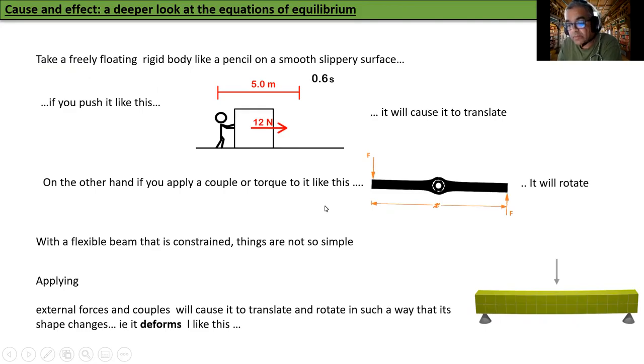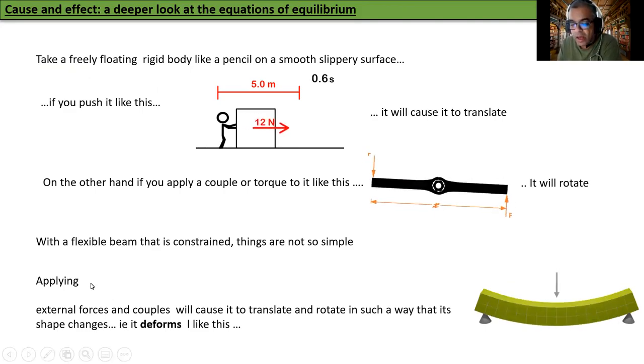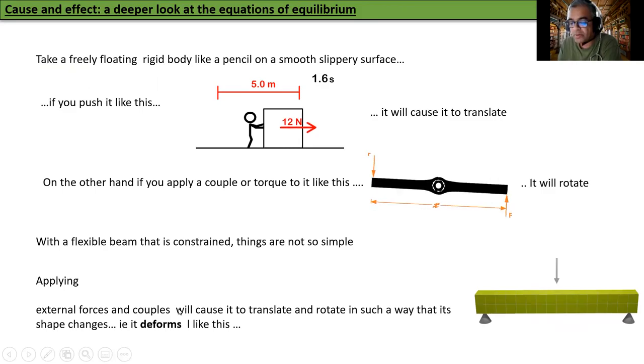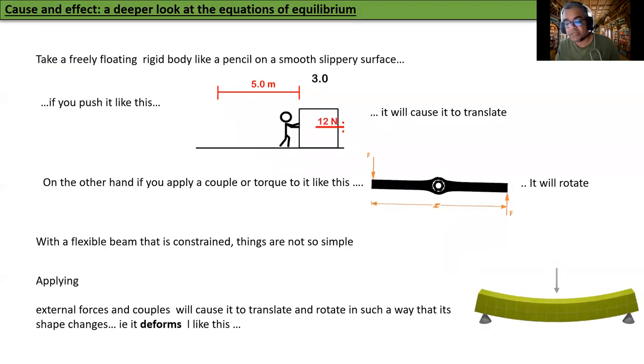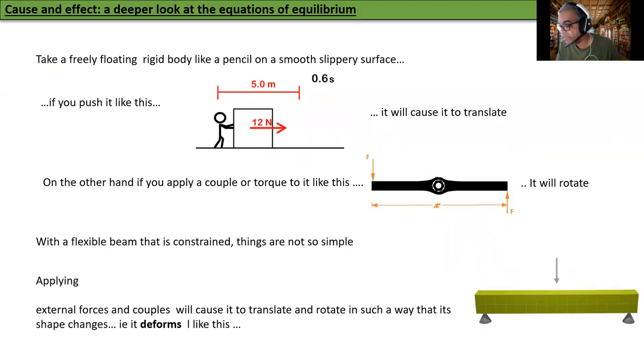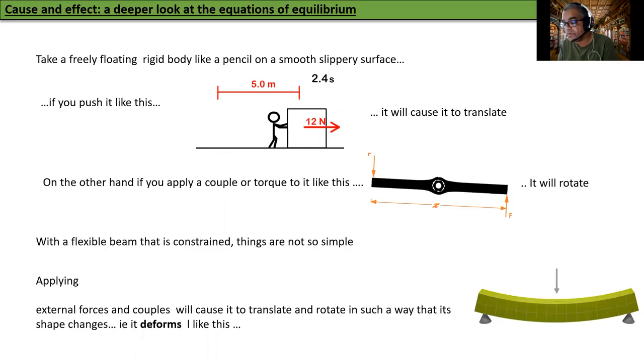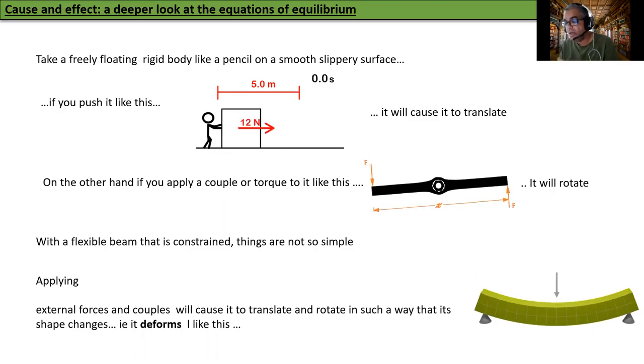However, when a flexible beam is constrained, then things are not so simple. Applying external forces and couples will cause it to translate and rotate locally in such a way that its shape changes, i.e. it deforms. So this deformation is composed of local coordinated translations and rotations.